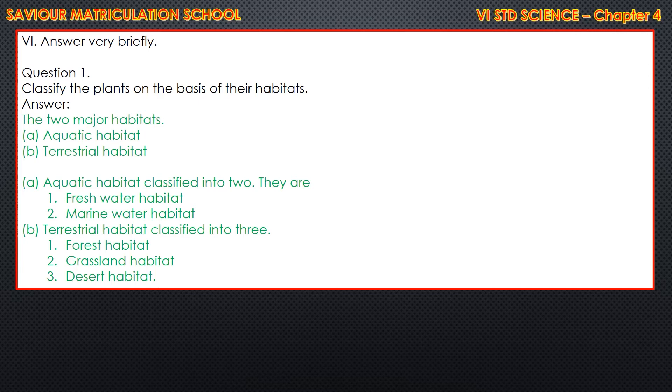Terrestrial habitat is again classified into three: forest habitat, grassland habitat, and desert habitat.